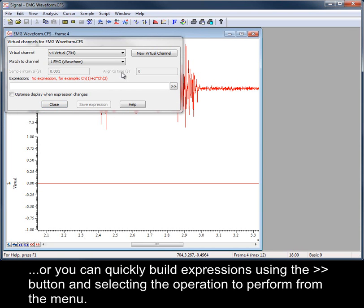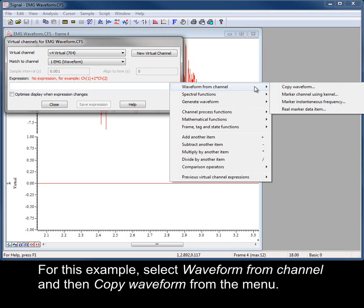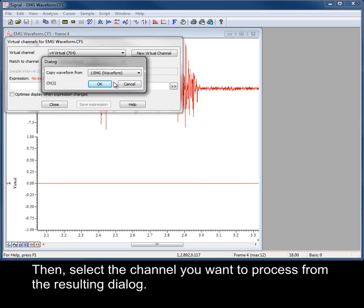Or you can quickly build expressions using the arrows button and selecting the operation to perform from a menu. For this example, select waveform from channel and then copy waveform from the menu. Then select the channel you want to process from the resultant dialog.